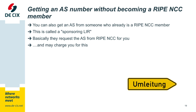There is also the possibility that you can get an AS number without becoming a RIPE NCC member. You can ask an existing member for it, and they become what is called a sponsoring local internet registry. They request the AS number for you and they may charge you for it, which is okay. So if you do not want to become a member yourself, you can also go this way.